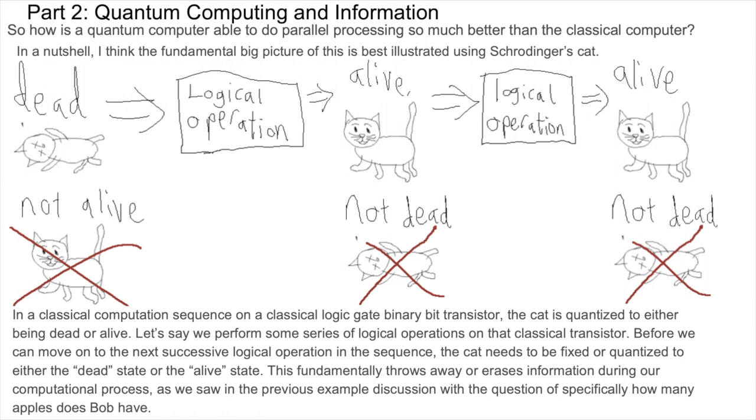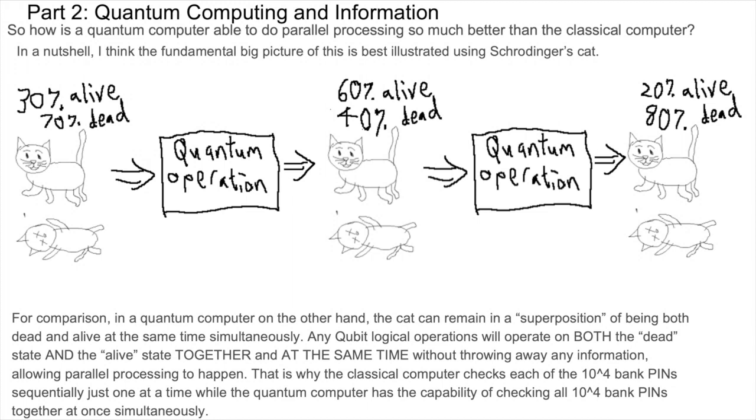In a nutshell, I think the fundamental big picture of this is best illustrated using Schrodinger's cat. In a classical computation sequence on a classical logic gate binary bit transistor, the cat is quantized to either being dead or alive. Let's say we perform some series of logical operations on the classical transistor. Before we can move on to the next successive logical operation in the sequence, the cat needs to be fixed or quantized to either the dead state or the alive state. This fundamentally throws away or erases information during our computational process, as we saw in the previous example discussion with the question of specifically how many apples does Bob have. For comparison, in a quantum computer on the other hand, the cat can remain in a superposition of being both dead and alive at the same time simultaneously. Any qubit logical operations will operate on both the dead state and the alive state together and at the same time without throwing away any information, allowing parallel processing to happen.